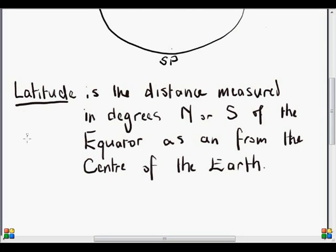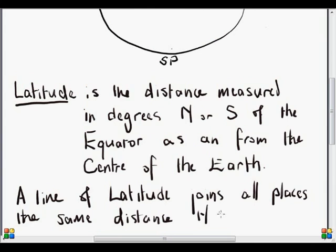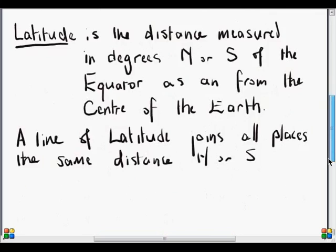So that is latitude, and then a line of latitude is all the places at the same distance north or south of the equator.